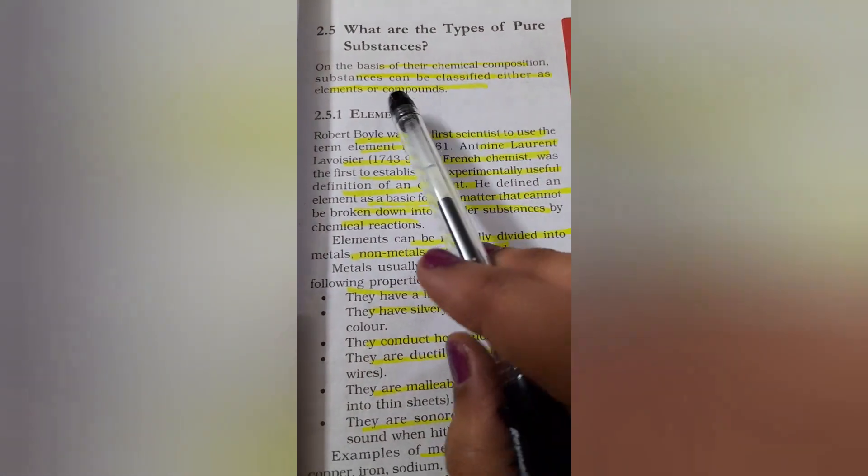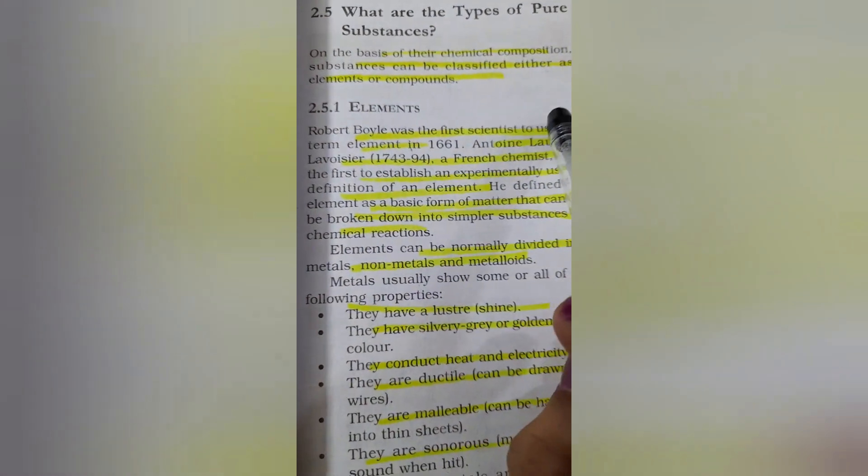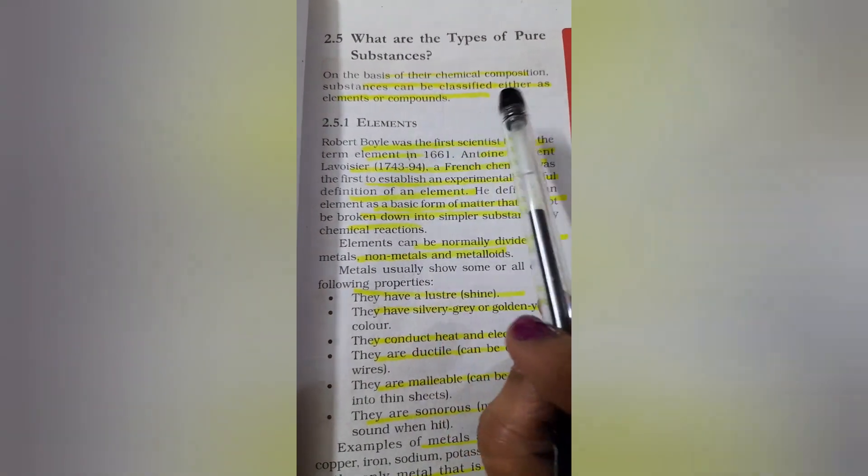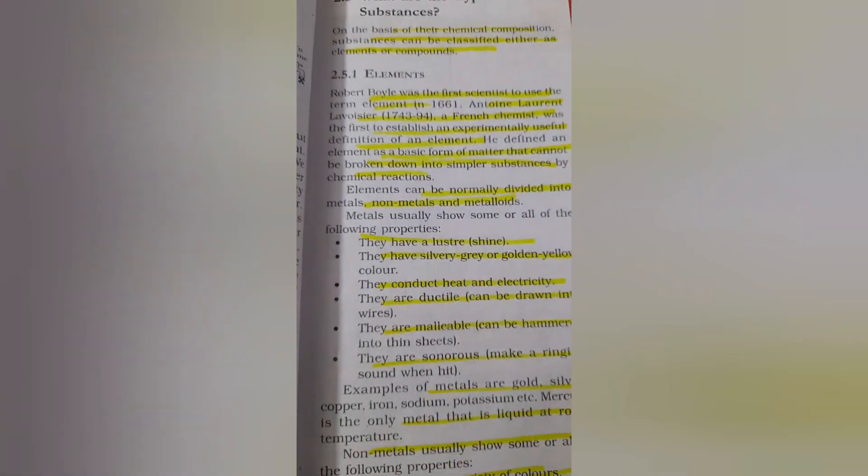What are the types of pure substances? On the basis of chemical composition, substances are classified either as elements or compounds. Now we will see what is meant by element.